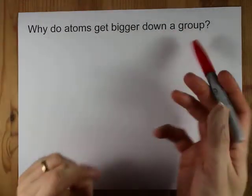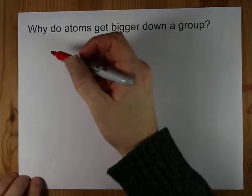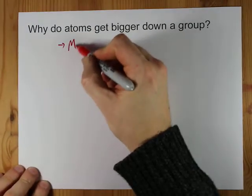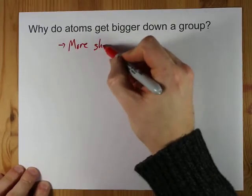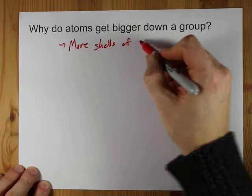Why do atoms get bigger as you go down a group on the periodic table? The answer simply is that there are more shells of electrons that are filled,